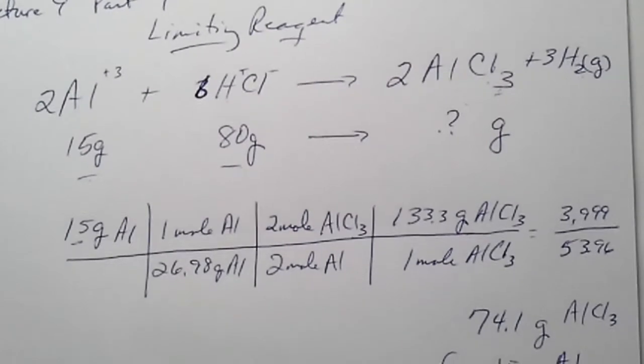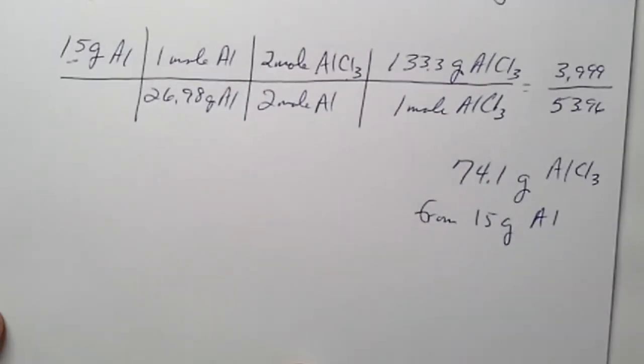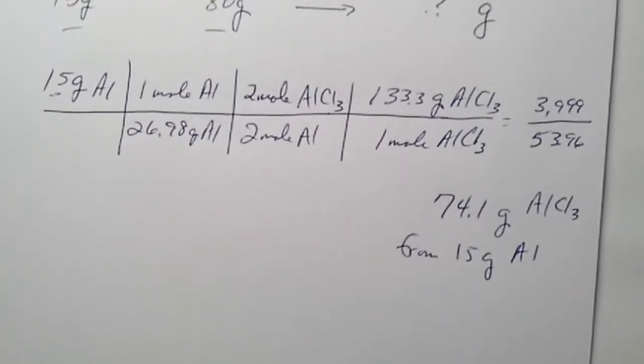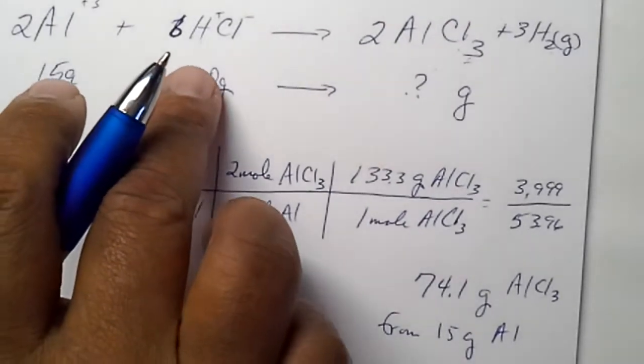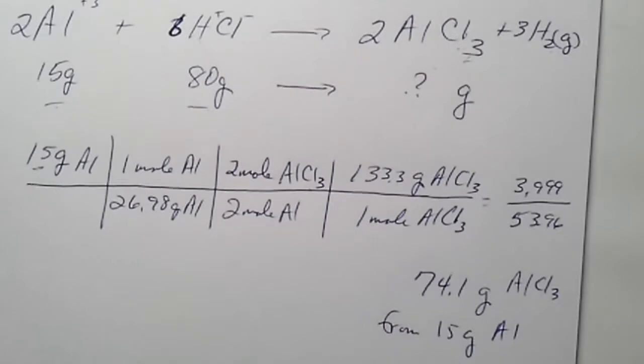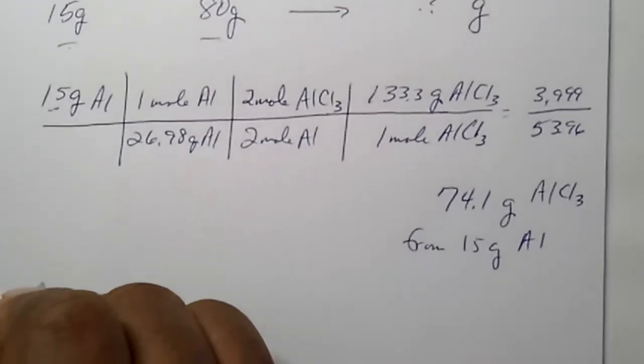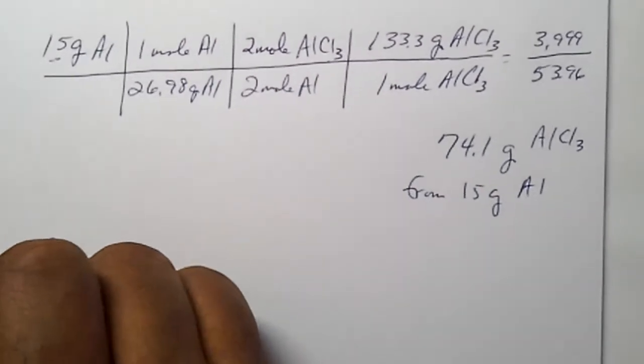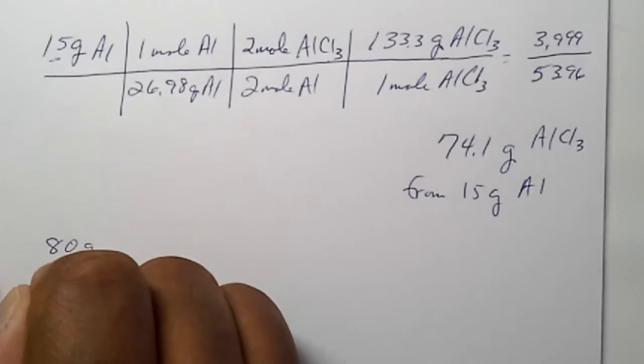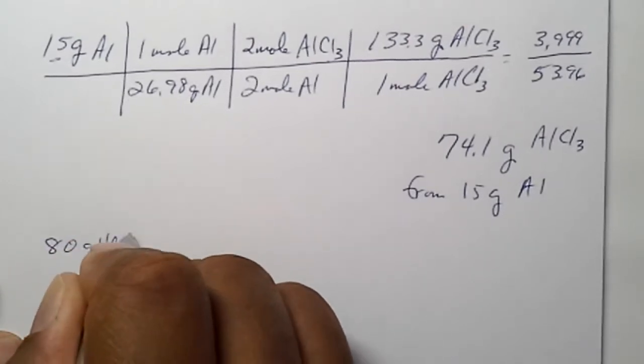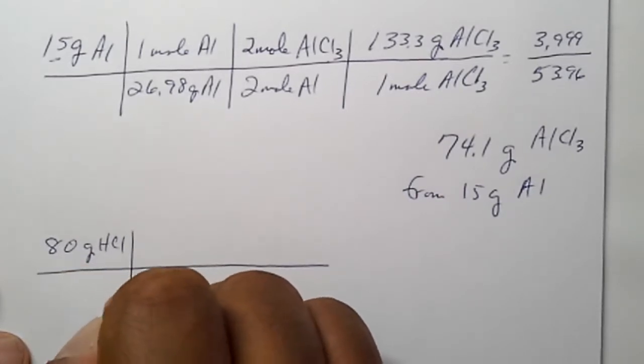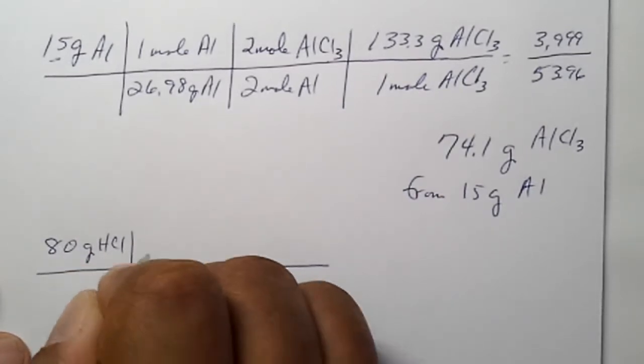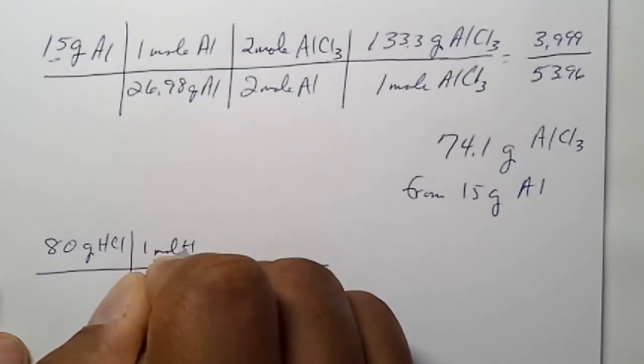Okay, now we have to do the whole thing for eighty-grams of hydrochloric acid. So, we have a lot of information already. Eighty-grams of HCl. Thirty-five plus one is thirty-six grams per mole of HCl.